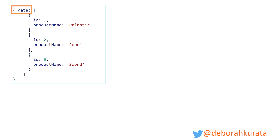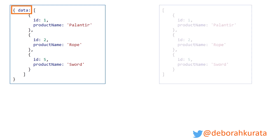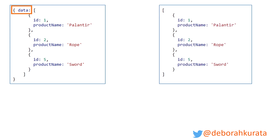When we issue an HTTP GET request to get some data from a server, we might end up with something like this on the left, where we're getting a data property with our array of data. But what we really want is just the array of data, which makes it easier to bind to and work with. So we can use a map for that.